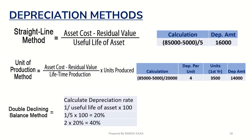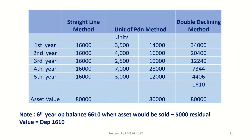For the double declining method: 1 divided by the useful life of the assets into 100 gives the base percentage; we then multiply by 2 for the double declining rate. Now looking at all three methods, I have calculated these for years one through four to help you understand.